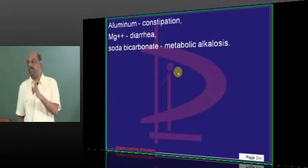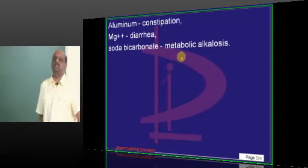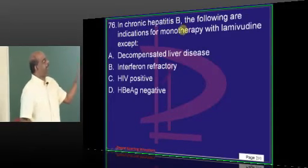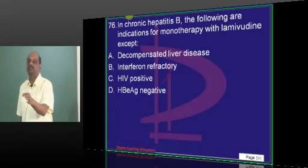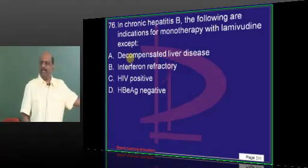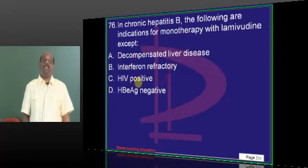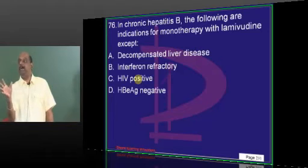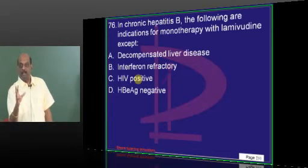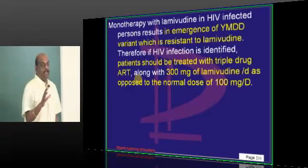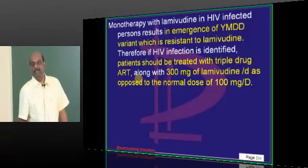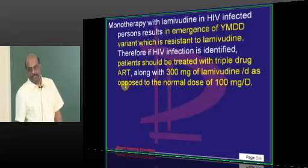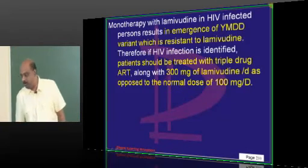Chronic hepatitis B. Monotherapy for lamivudine. What is the exception? This was a recent question asked in the Maharashtra state entrance. In which scenario will you alter your therapy of giving monotherapy of lamivudine? If your patient has a co-infection of hepatitis B and HIV, the monotherapy will bring resistance to lamivudine. So you need to give triple drug antiretroviral therapy, and instead of 100 milligrams per day normal dose of lamivudine, you need to give 300 milligrams of lamivudine.